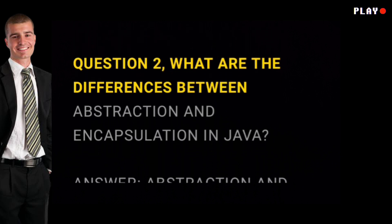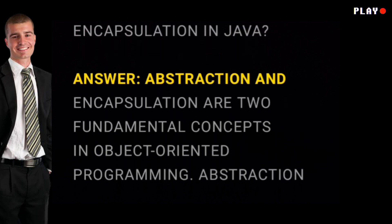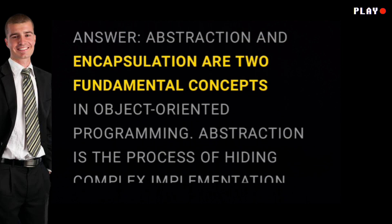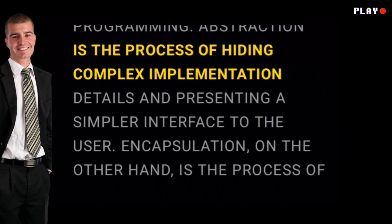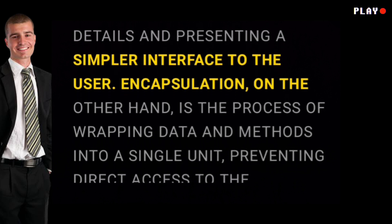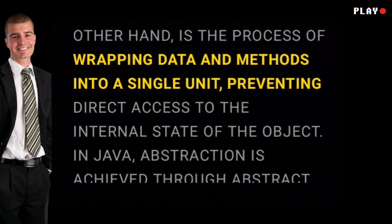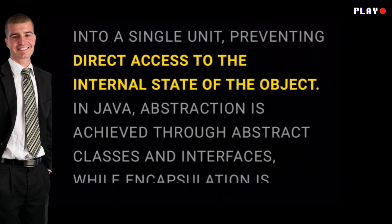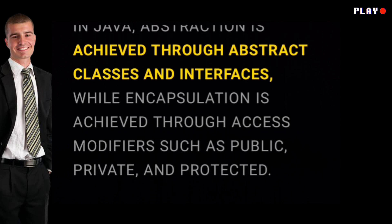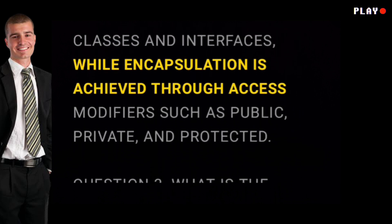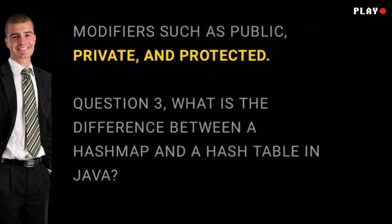Question two: what are the differences between abstraction and encapsulation in Java? Answer: abstraction and encapsulation are two fundamental concepts in object-oriented programming. Abstraction is the process of hiding complex implementation details and presenting a simpler interface to the user. Encapsulation, on the other hand, is the process of wrapping data and methods into a single unit, preventing direct access to the internal state of the object. In Java, abstraction is achieved through abstract classes and interfaces, while encapsulation is achieved through access modifiers such as public, private, and protected.